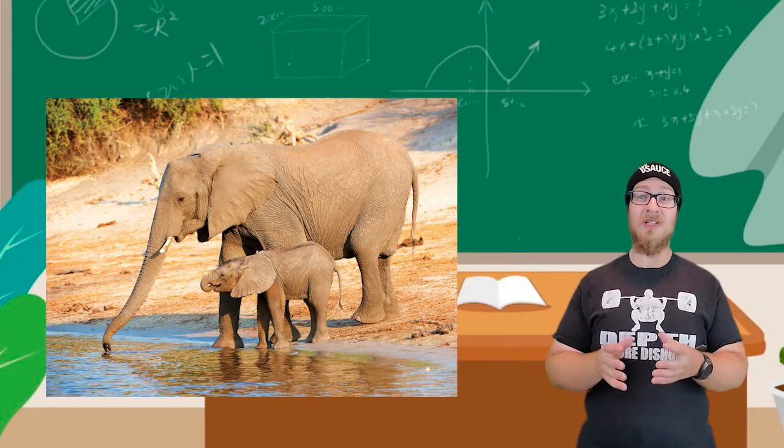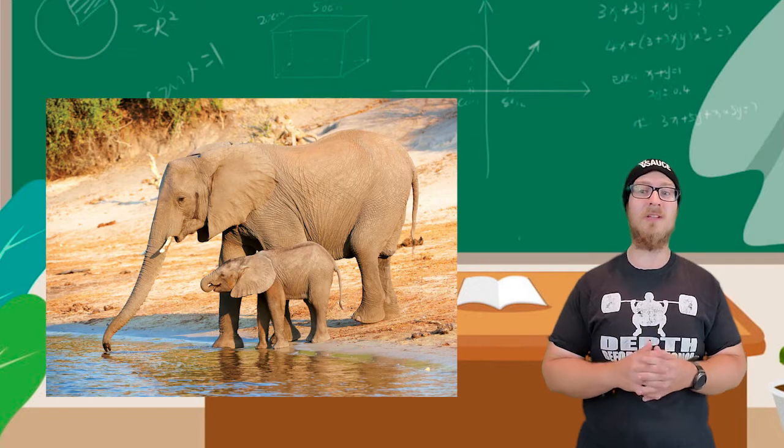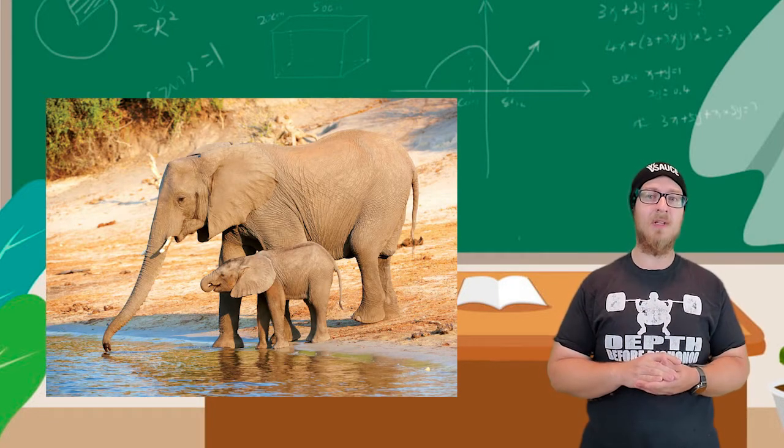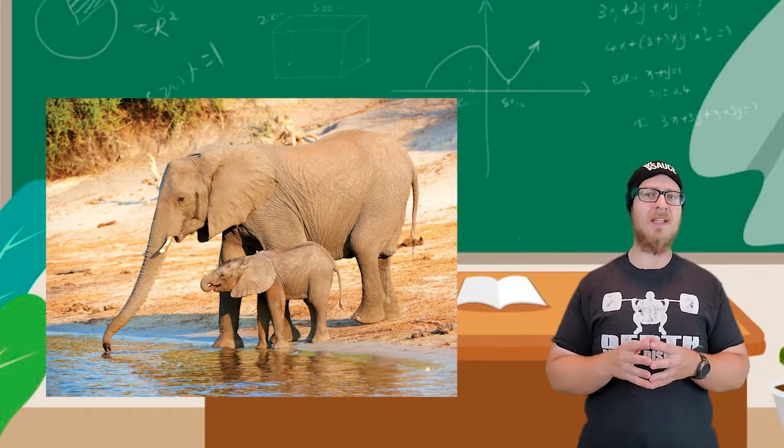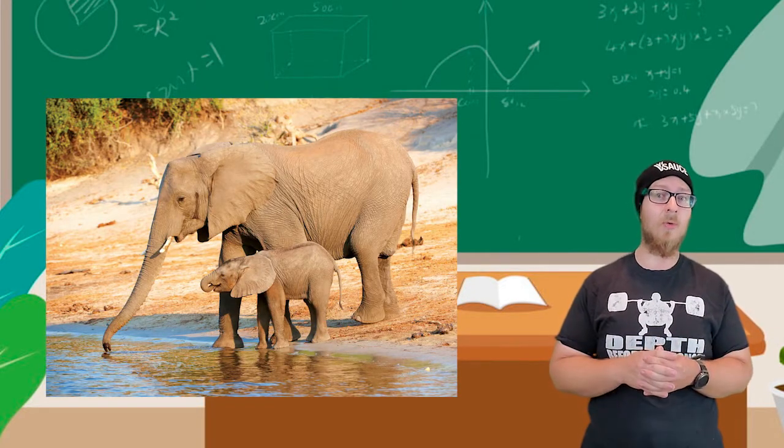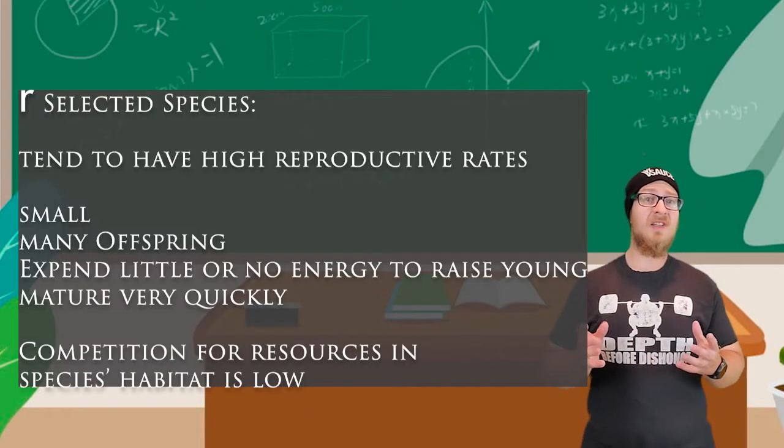Elephants don't reach reproductive age until they're about 14 years of age and give birth to only one calf at a time. They have long lifespans and typically don't grow to full size until they're about 30 years old.